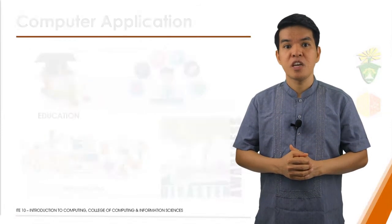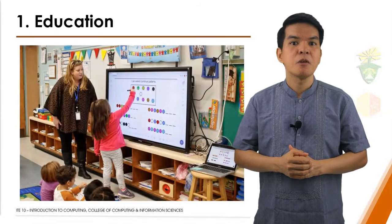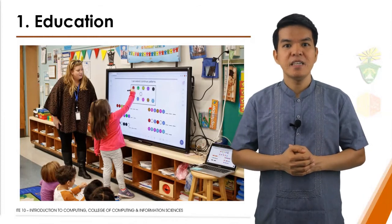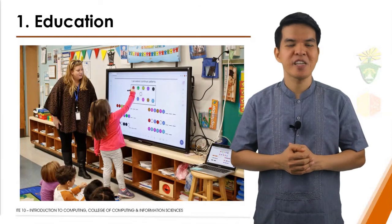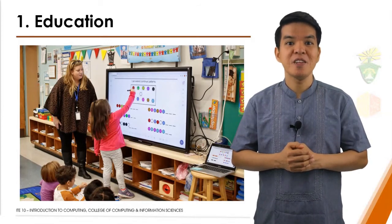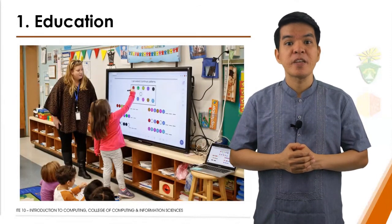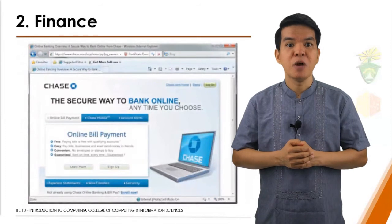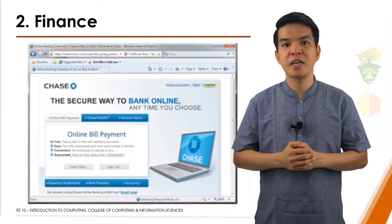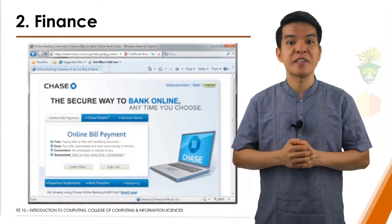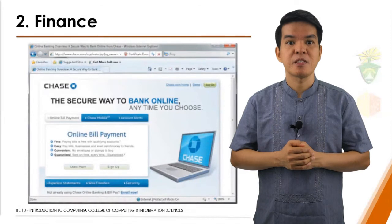Education is the process of acquiring knowledge. In the traditional model, people learn from other people such as parents, teachers, and employers. Today, educators are also turning to computers to assist with education. For example, in the image shown, the teacher uses an electronic board to present the lesson interactively. Other people and companies use computers to help manage their finances. Some use finance software to balance checkbooks, pay bills, track personal income and expenses, manage investments, and evaluate financial plans. These software usually include a variety of online services — for example, computer users can track investments and do online banking.